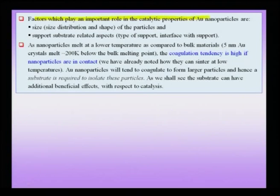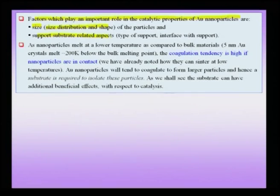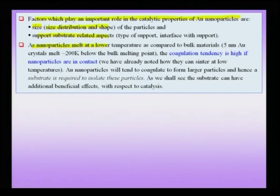Factors playing an important role in the catalytic properties of gold are: size and size distribution and shape of the gold nanoparticle, and the substrate — the type of support and the interface with the support. Gold nanoparticles cannot be left in contact with each other because they will tend to coagulate (since nano-scale gold melts at lower temperatures, about 200 degrees below the bulk for 5 nm particles), so they are embedded in a substrate such as Fe₂O₃ or NiO. The substrate performs the first important role of isolating the gold nanoparticles.